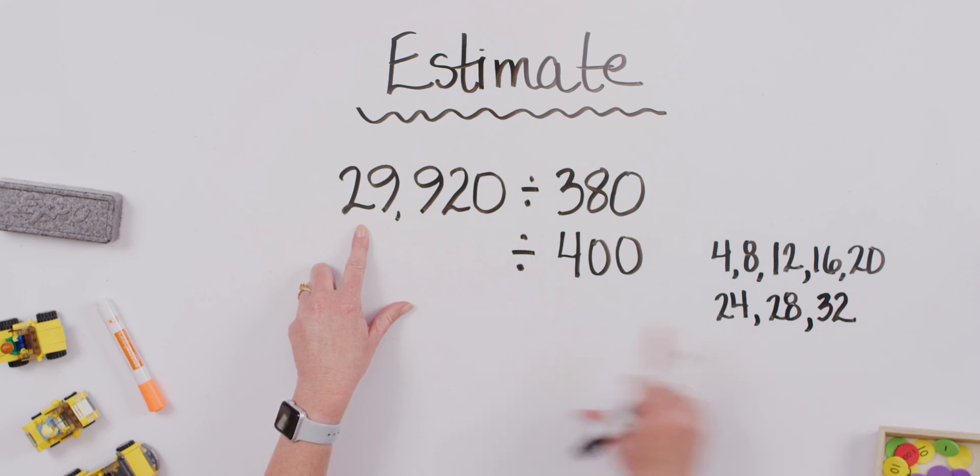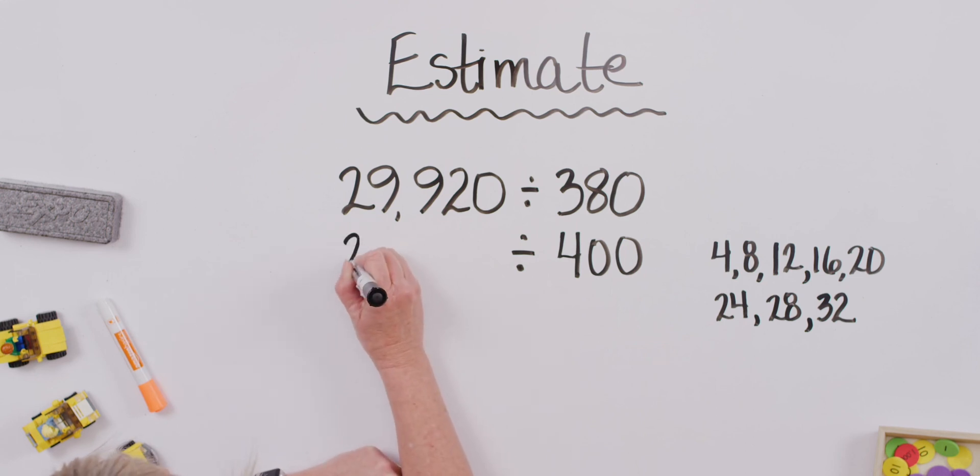Now, looking at our number 29 here, is there a number that we can kind of round it to that would be a multiple of 4? Yeah, 28 would probably be the closest. So, let's round this number down to 28 to make it easier to estimate.